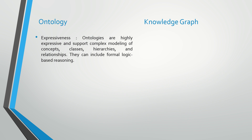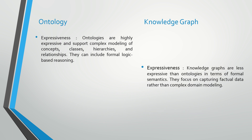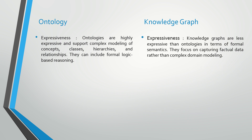Ontologies are highly expressive and support complex modeling of concept classes, hierarchies, and relationships. They can include formal logic-based reasoning. Knowledge graphs are less expressive than ontologies in terms of formal semantics. They focus on capturing factual data rather than complex domain modeling.